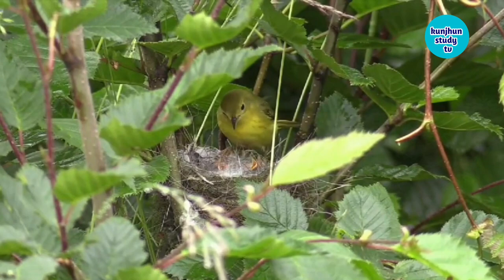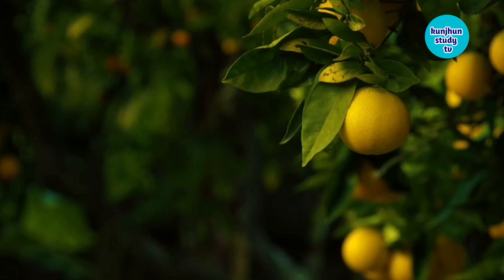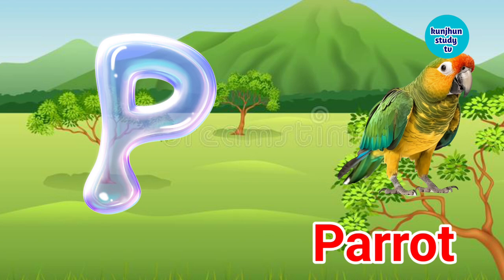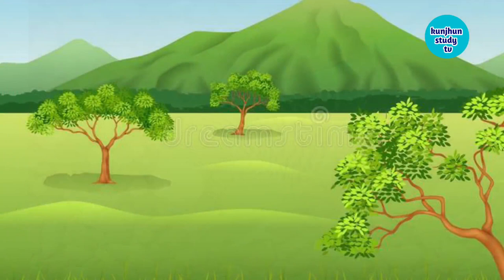O. O for orange. Orange means santara. P. P for parrot. Parrot means tota. Q. Q for quail. Quail means bater.